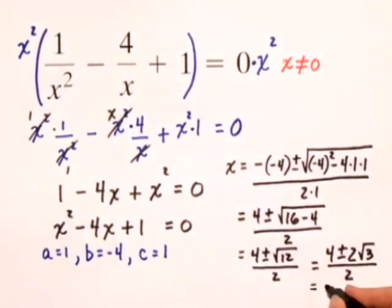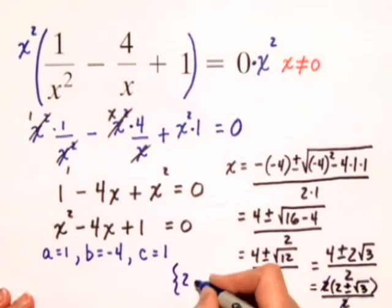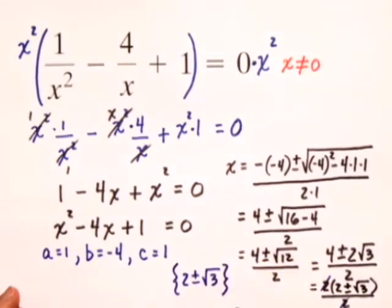we're left with 2 plus or minus the square root of 3, all over 2. And we can divide out those like factors of 2. And our final answer is just going to be 2 plus or minus the square root of 3. We'll write that in set notation. Our solution set is 2 plus or minus the square root of 3.